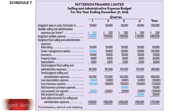Here's the selling and administrative expense budget — all expenses not included in production. It starts with a variable component and a fixed component. The variable selling and administrative expense per frame has an asterisk: there are commissions, clerical, and shipping involved. That variable expense is driven by units of sales, which we get from schedule one. So here are the budgeted sales in units for the four quarters.